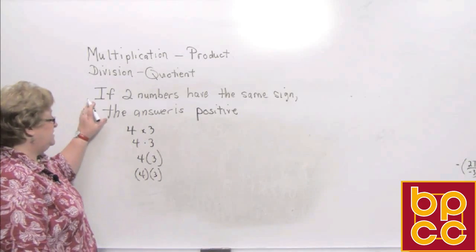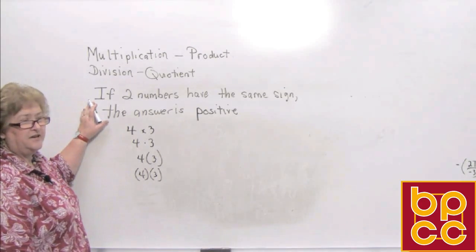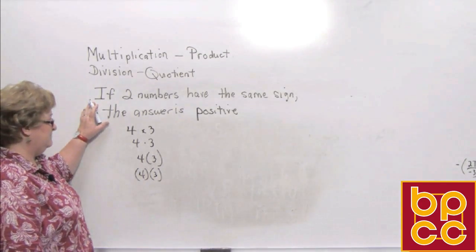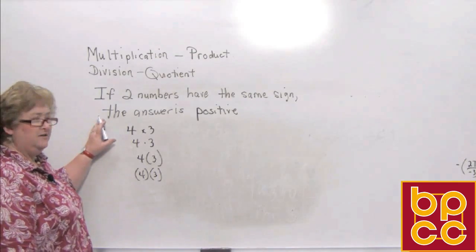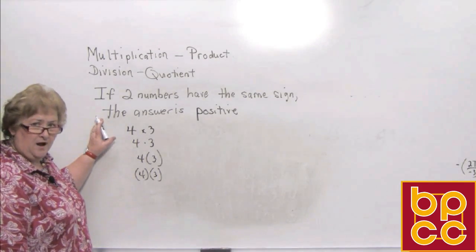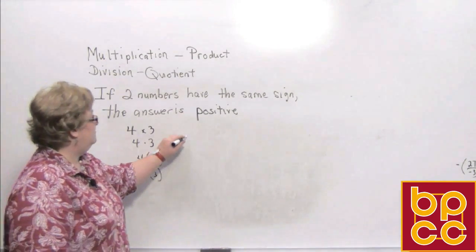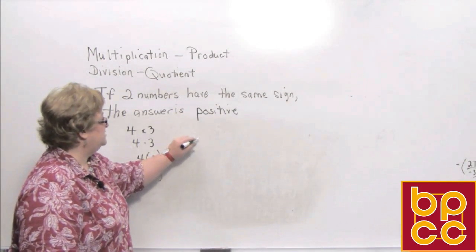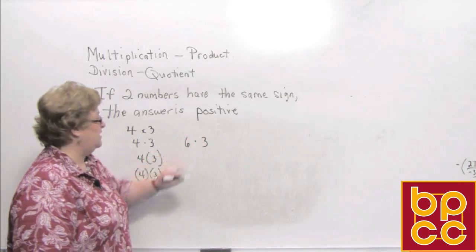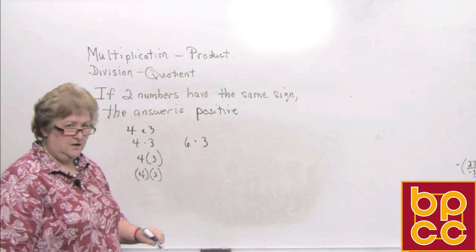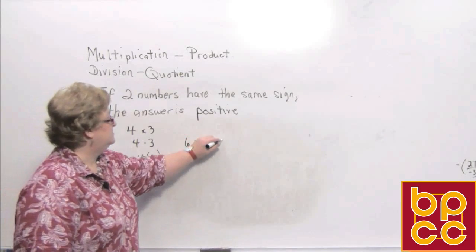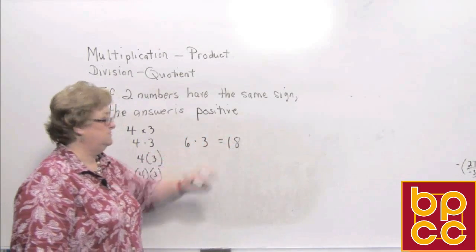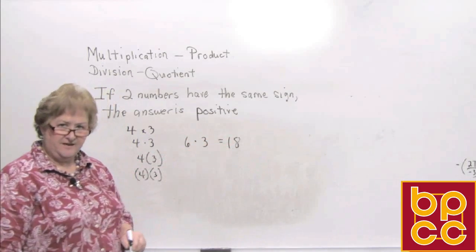If two numbers have the same sign, the answer will be positive. If I have a positive 6 times a positive 3, the answer is, as it has always been, a positive 18.